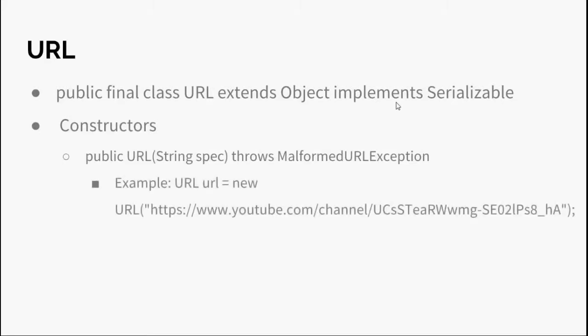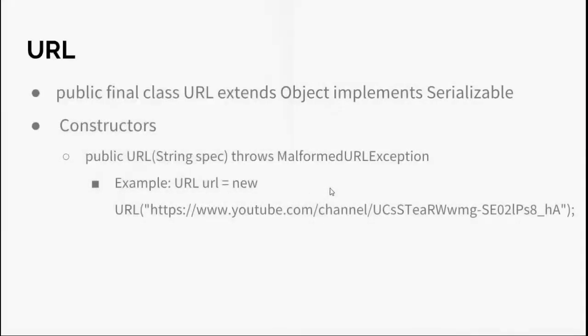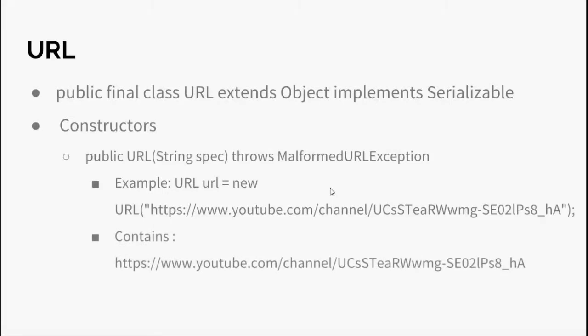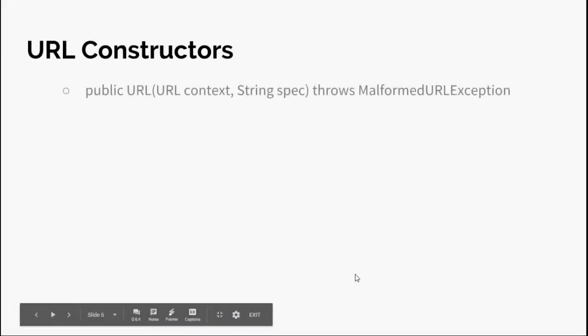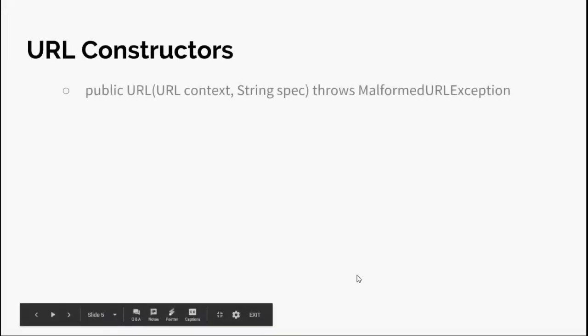Example of the first constructor: URL url = new URL("..."). The URL object then contains the URL we specified. The second constructor is public URL(URL context, String spec) throws MalformedURLException — it creates a URL object from a specified string and a context URL.